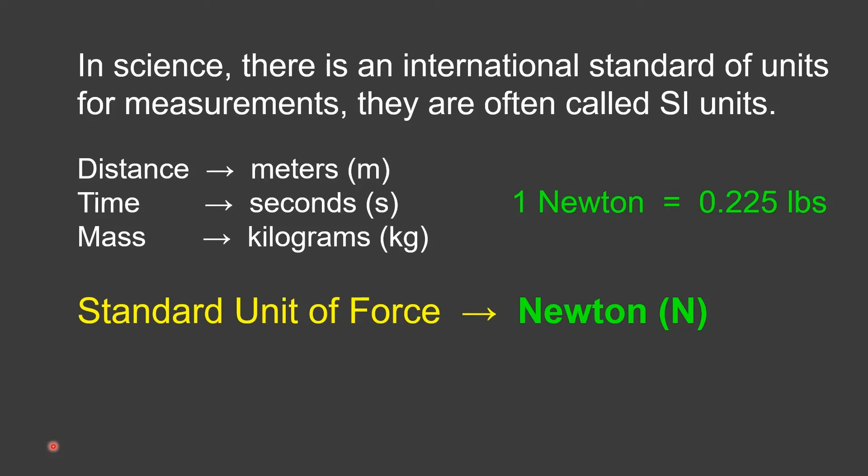To give you an idea of scale, one Newton is only about 20% of a pound, so 0.225 pounds. So what that means is if you had 100 newtons, that would be about 22 pounds. If you had 10 newtons, that'd be a little over 2 pounds.